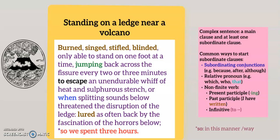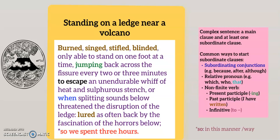'So' means in this manner or in this way — in other words, in this way we spent three hours. Bird has deliberately placed the main clause last. The subordinate clauses being first suggest simultaneous actions — lots of things happening at the same time. They build a fast pace. At the same time that the speaker and her companion are jumping backwards and forwards over the ledge, the volcano is making splitting sounds. They're keenly aware that it might destroy the ledge, but they still keep looking down because they're fascinated by what they see.